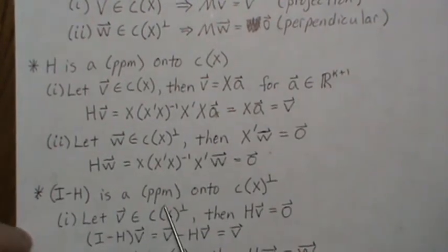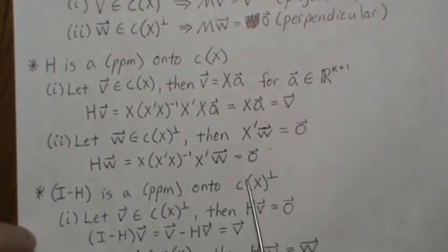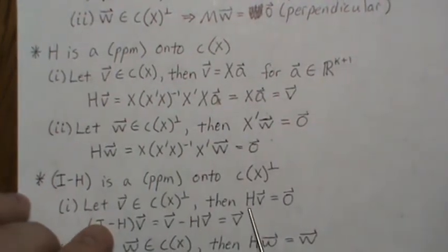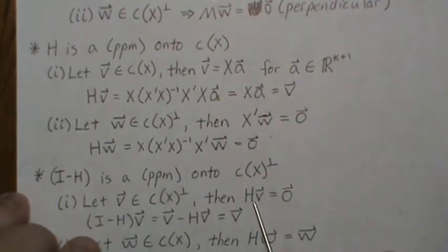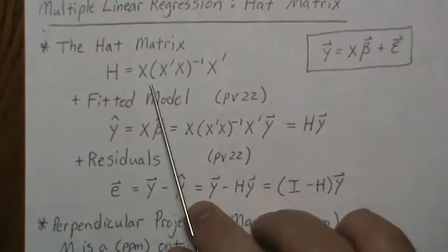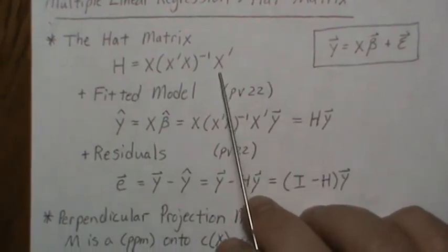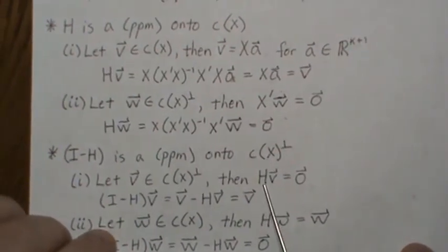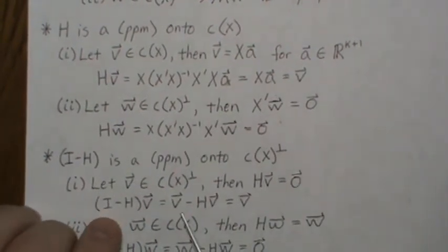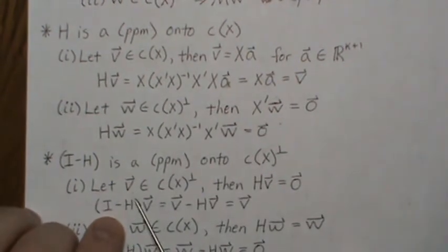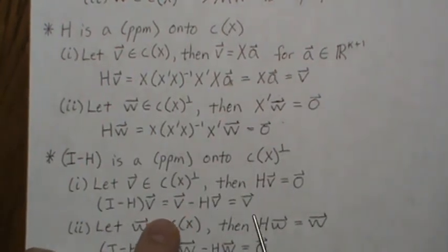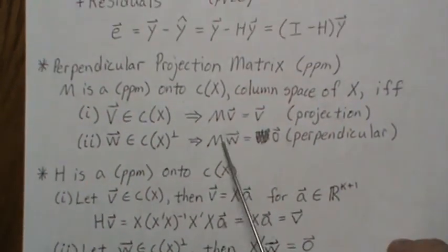Now i minus h is a perpendicular projection matrix on the orthogonal complement of the column space of x. Let v be in this orthogonal complement. Then hv is zero, because x transpose v equals zero since v is in the orthogonal complement. When we pre-multiply v by i minus h, we get v minus hv, but hv was zero, so we get v back — satisfying property number one.